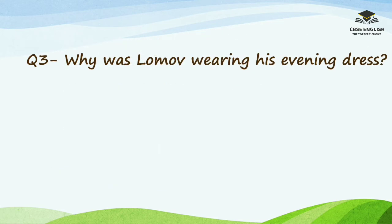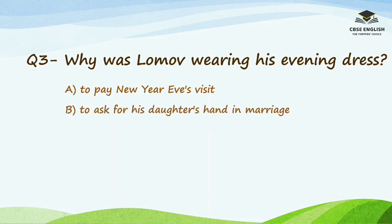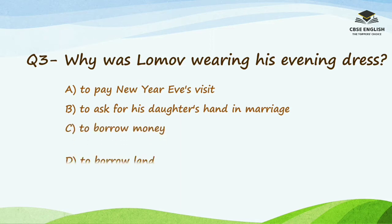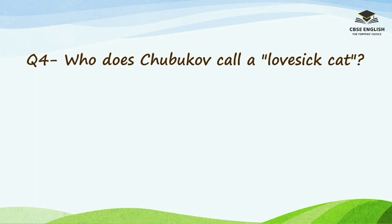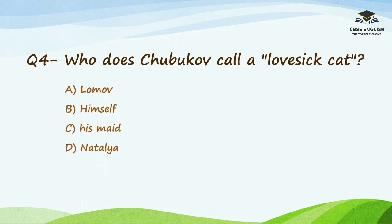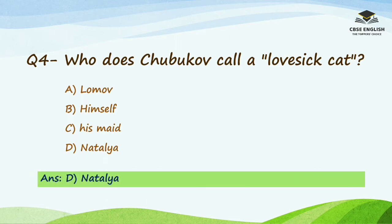Question number 3: Why was Lomo wearing his evening dress? Options are to pay New Year Eve's visit, to ask for his daughter's hand in marriage, to borrow money, or to borrow land. The right answer is to ask for his daughter's hand in marriage. Question number 4: Who does Chubukov call a lovesick cat? Options are Lomo, himself, his maid, or Natalia. The right answer is Natalia.